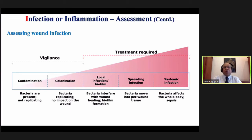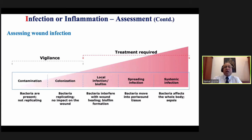Coming to the second part — Infection and Inflammation. Assessment is most important. Different terminologies: contamination means bacteria are present but not multiplying; colonization means bacteria are present and multiplying, for example normal gut flora. When there is contamination or colonization, it does not require antibiotic treatment — just keep a watch, which is why the term 'vigilant' is used.